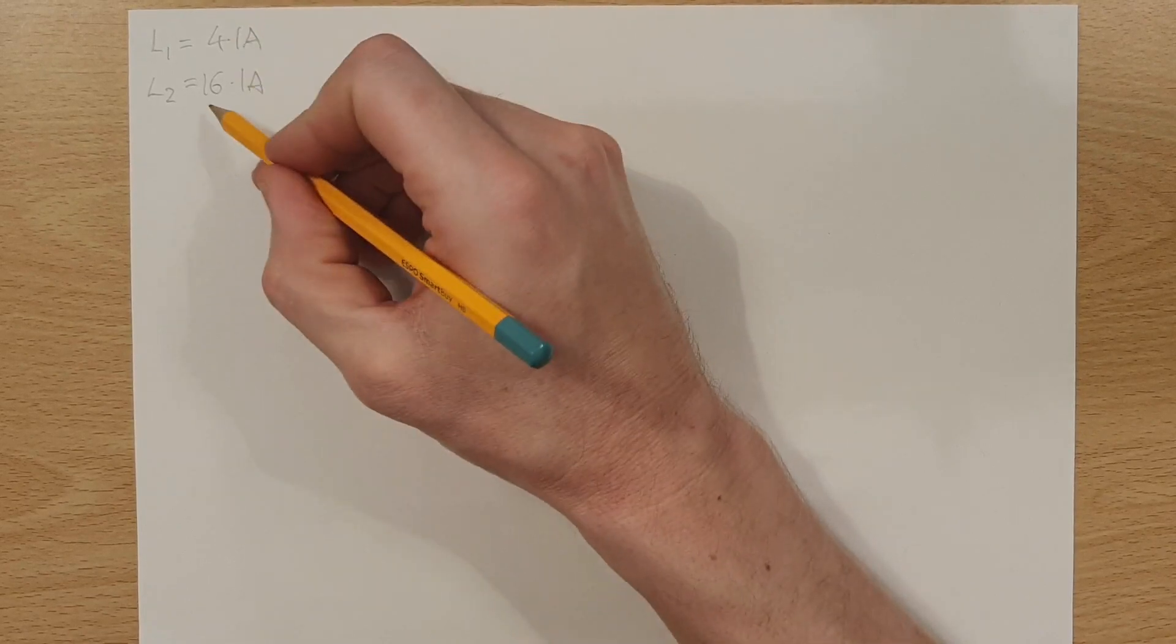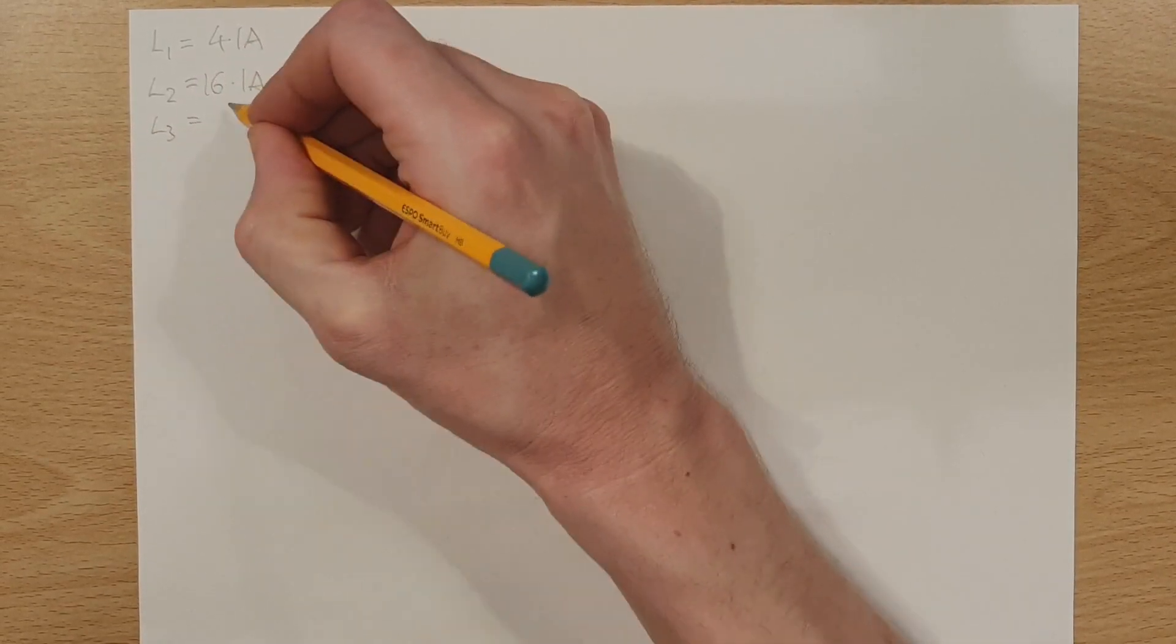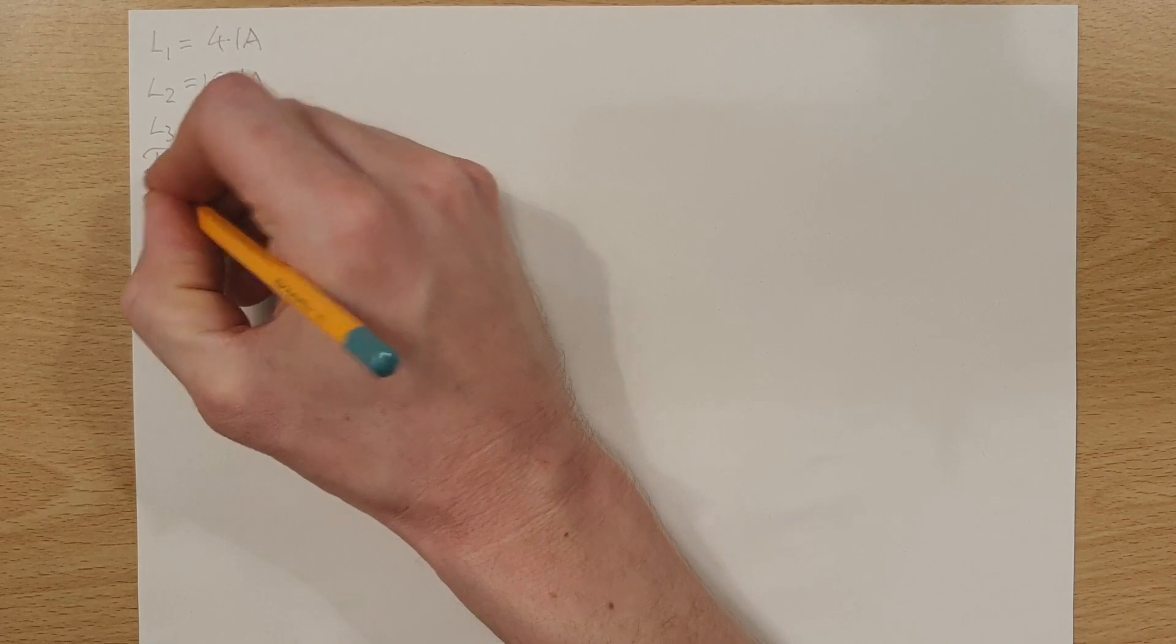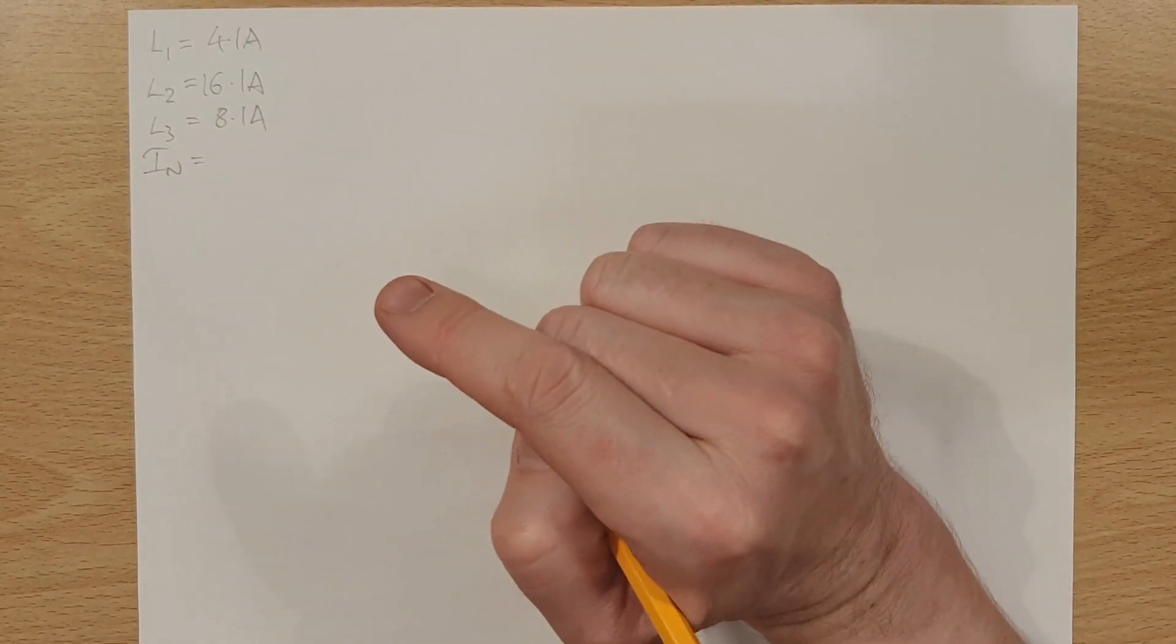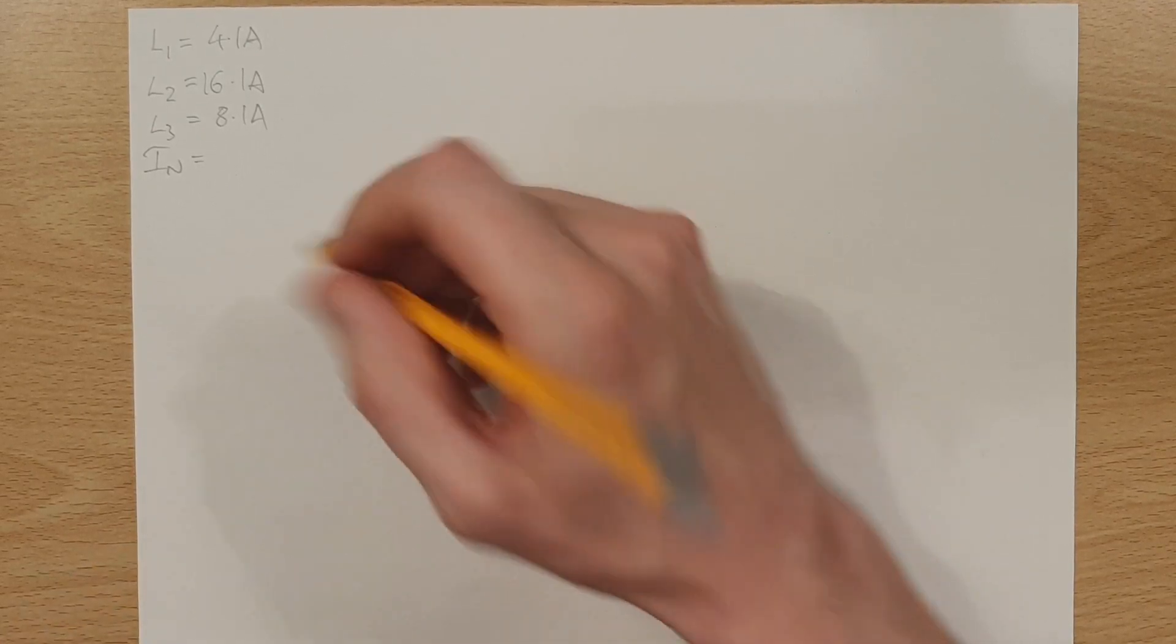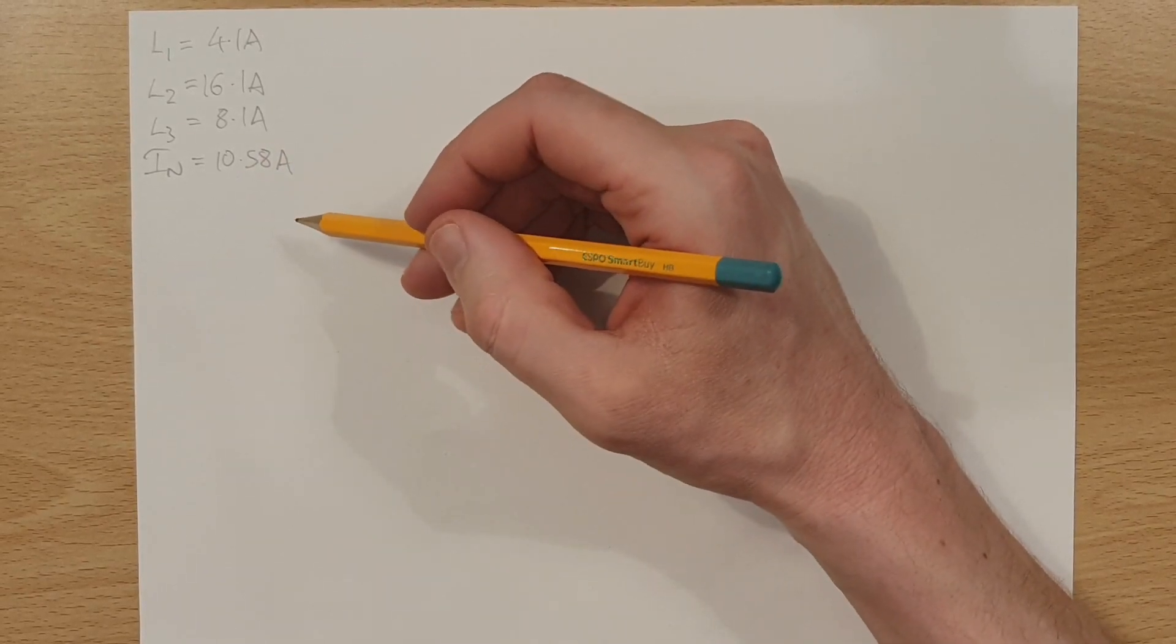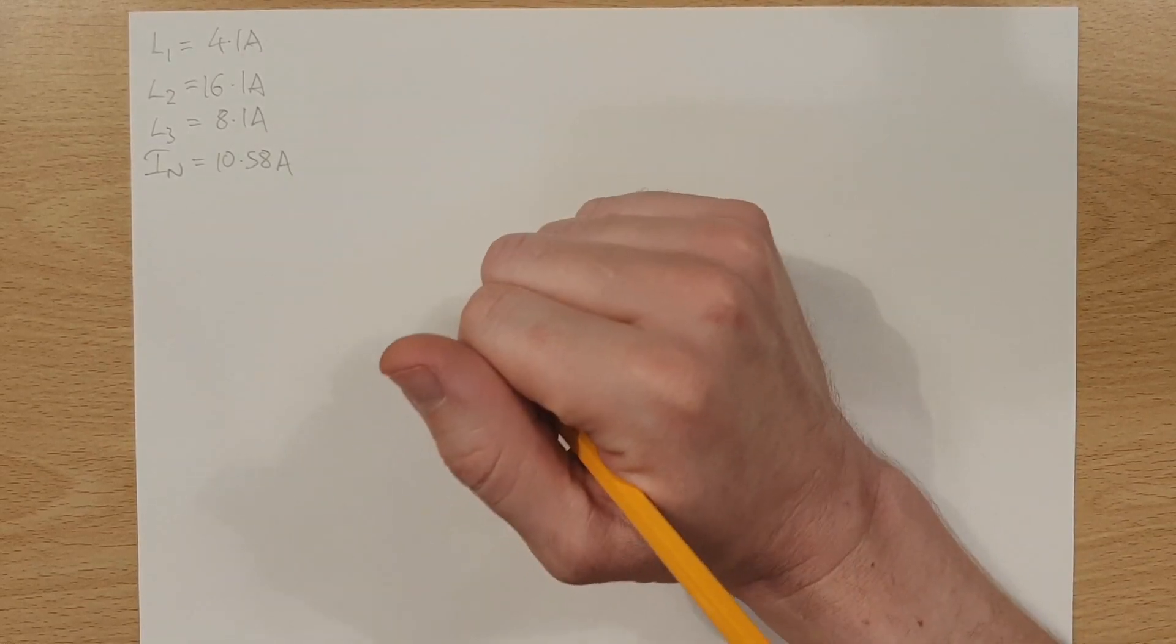In L2, we had 16.1 amperes flowing. And in L3, we had 8.1 amperes. And then finally, we measured the current in the neutral and that came out at a value. But then when we calculated it in the follow-up video, we saw that the value came out at 10.58 amperes. So we measured it slightly different to that. And then we calculated it. And we explained the reasons why those two values weren't exactly the same.